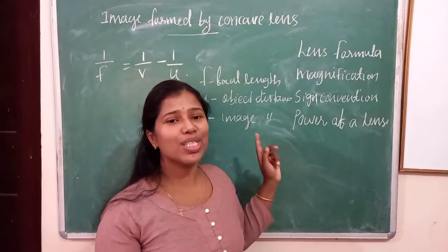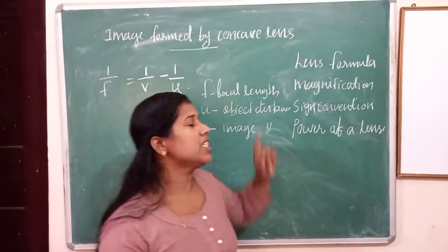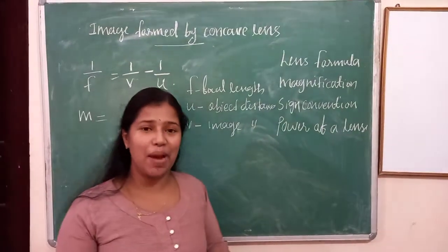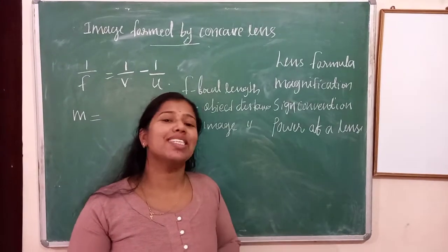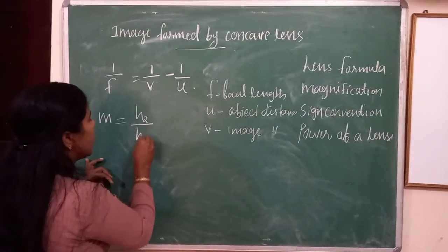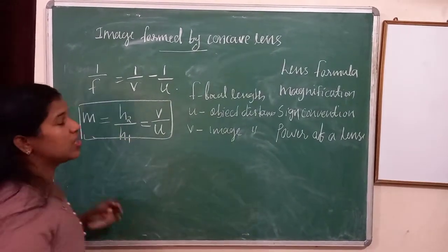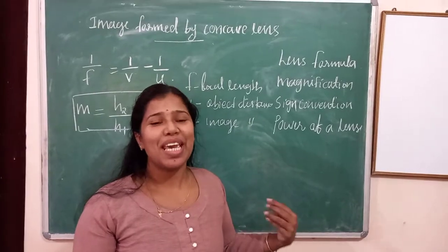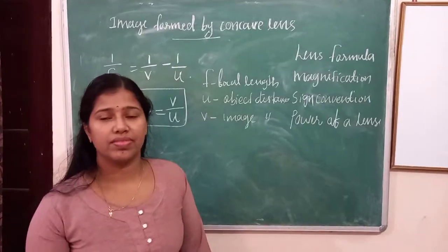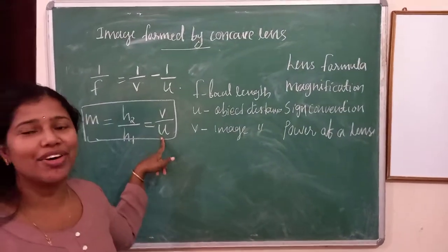This is the relation between f, u, and v. F means focal length. U means object distance. V means image distance. It is the relation between these three terms: focal length, object distance, and image distance. Next is magnification. Magnification is denoted by the small letter m. It is the ratio of size of the image to the size of the object. We can write: m is equal to h2 divided by h1, which is equal to v divided by u. Here h2 means height of the image, h1 means height of the object.